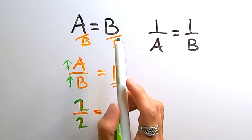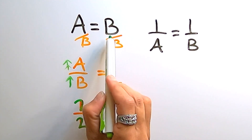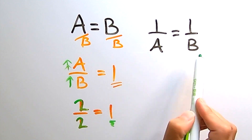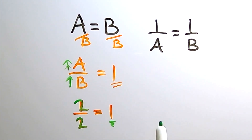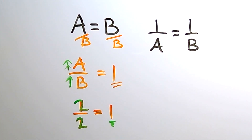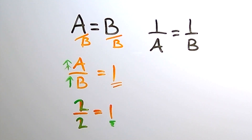When two variables are on opposite sides of the equal sign, both in the numerator or both in the denominator, or when they're on the same side of the equal sign, one on top of the other, they are directly related to each other — meaning as one increases, the other will increase, and as one decreases, the other will also decrease at the same rate. This is a direct relationship.